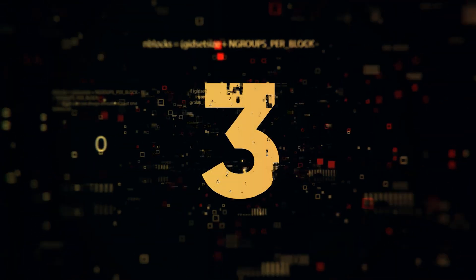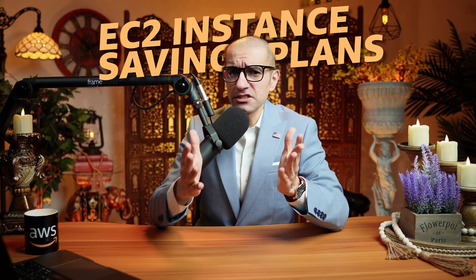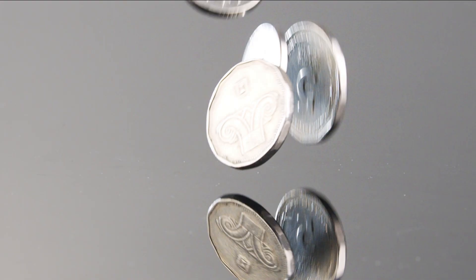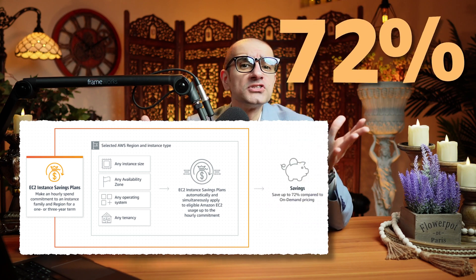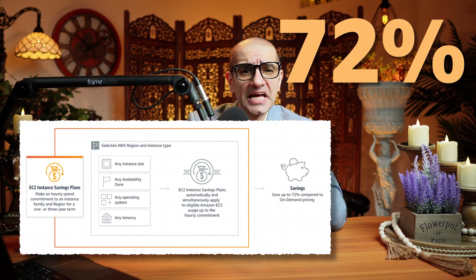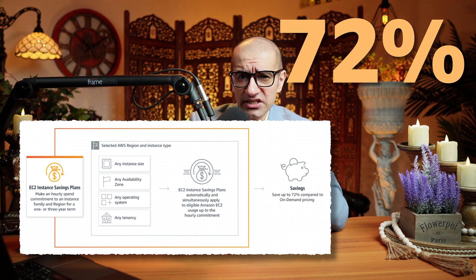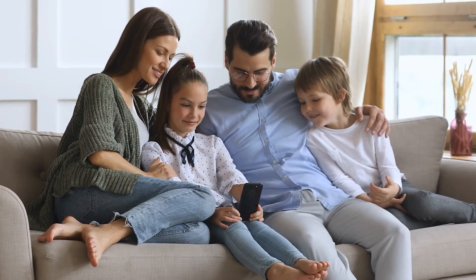Number 3. EC2 Instance Savings Plans provide the lowest prices, offering savings of up to 72% in exchange for a commitment to the usage of individual instance families in a region.